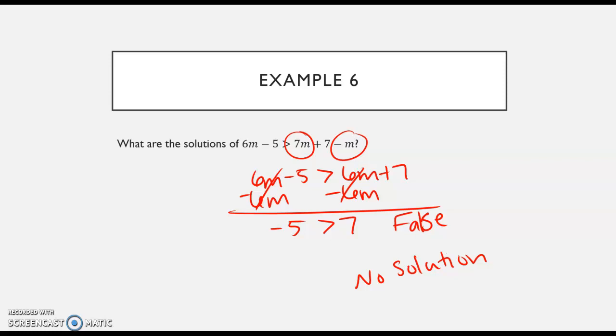If the statement we are left with is true, then it is all real numbers. If the statement we are left with is false, then it's no solution. So I hope that helps you. That is it for multi-step inequalities. See you on the flip side.